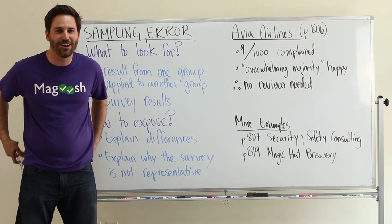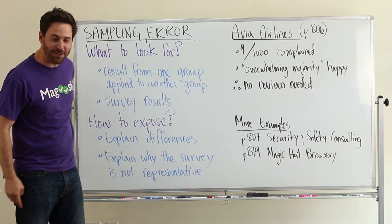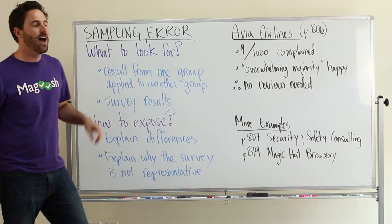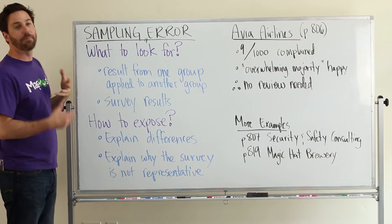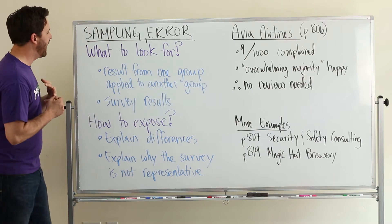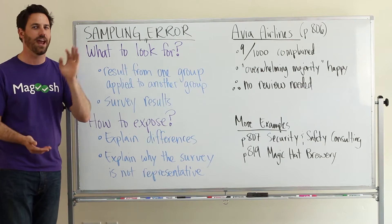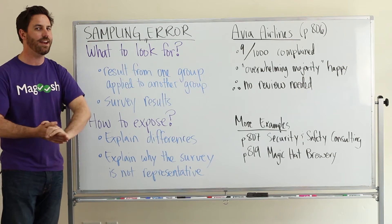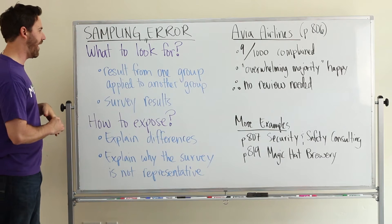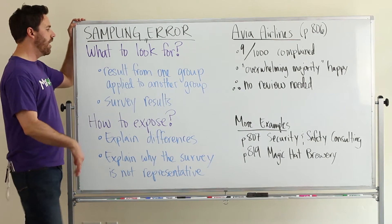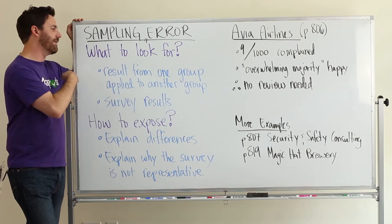Today we're looking at another common flaw in arguments on the GMAT. This flaw is called a sampling error and it pops up a lot on the test, so let's look at how we can identify it and then also how we can expose it for your essay. What to look for: